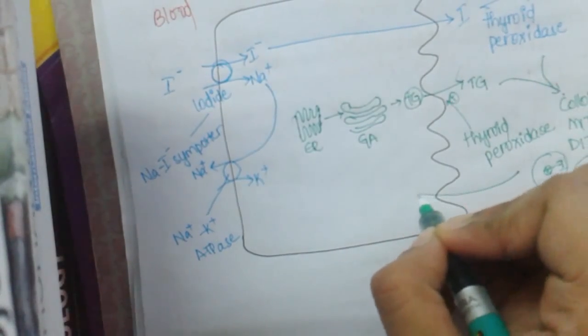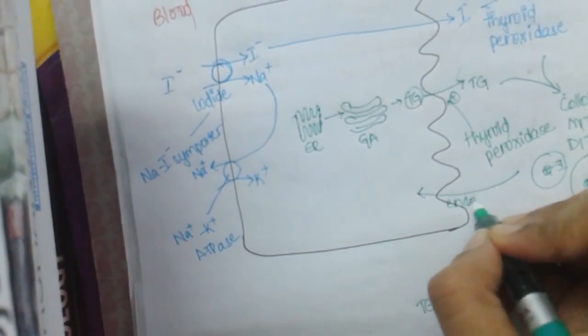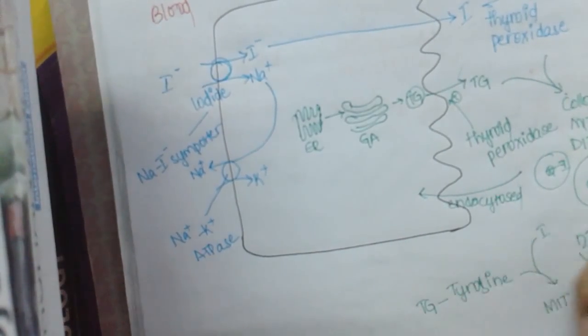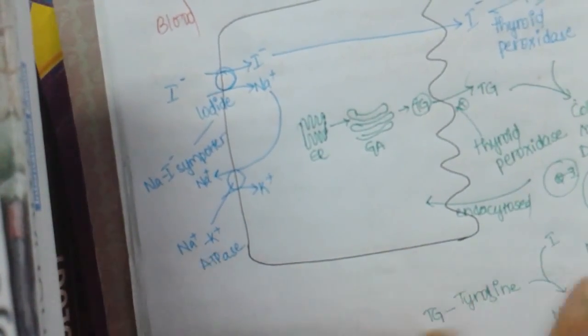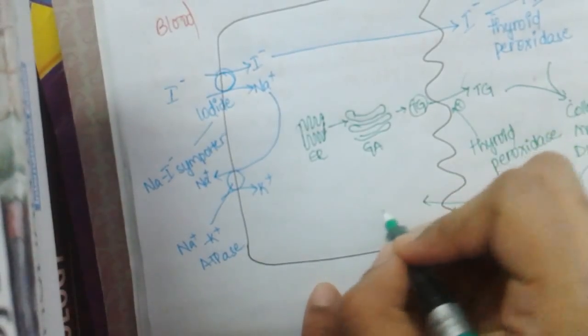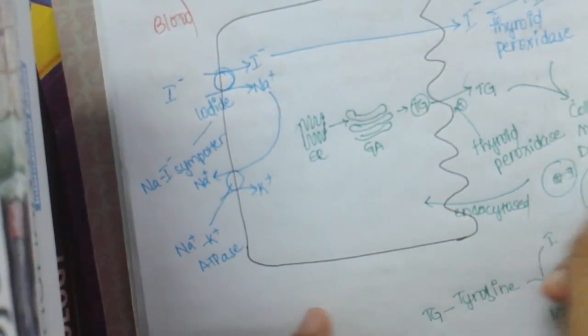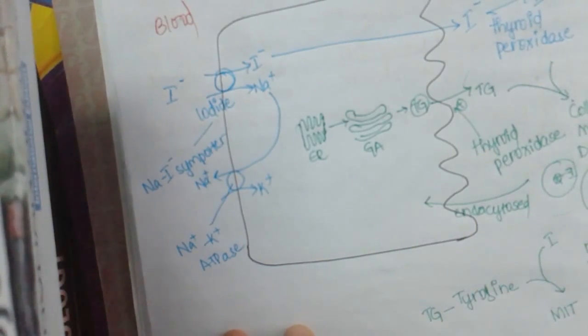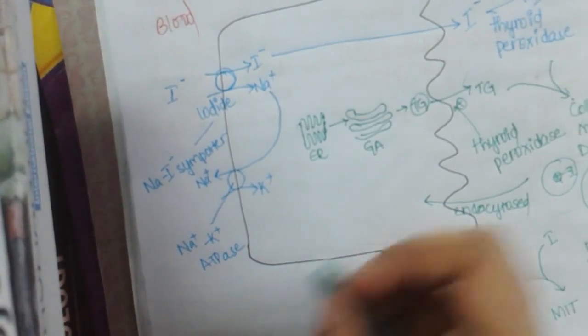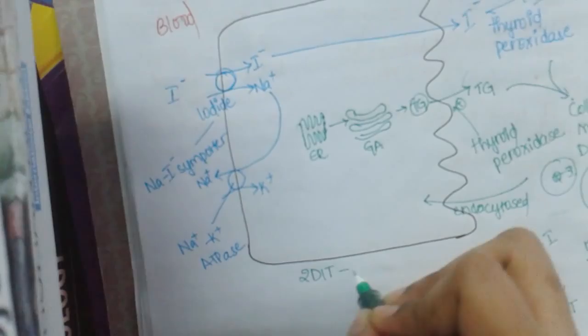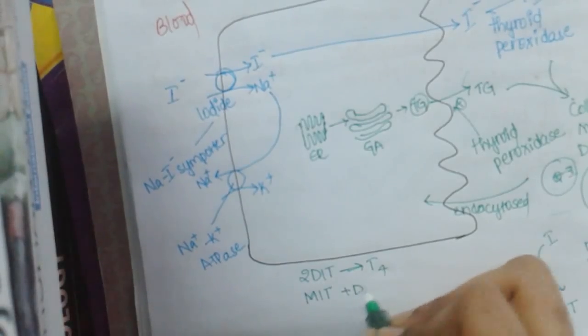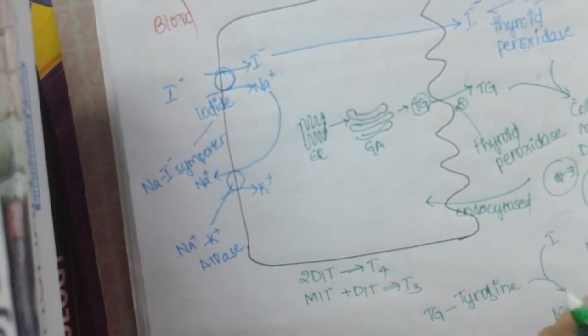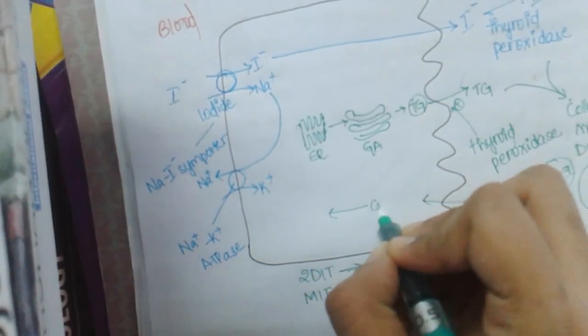So this colloid granule is endocytosed into the cell, into the follicular cell. Because this tyroglobulin should reach the blood right now. So it is endocytosed. And this undergoes lysis. This part undergoes lysis and coupling. So first there will be a coupling reaction. In the coupling reaction, two diiodotyronin forms T4 and one monoiodotyronin and diiodotyronin forms T3. So T3 and T4 are formed by this coupling reaction which occurs here.